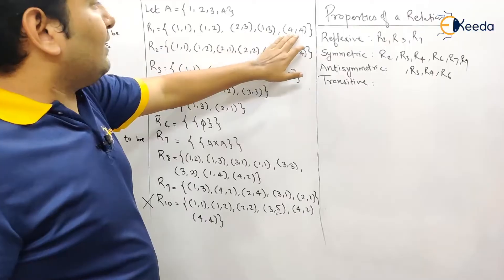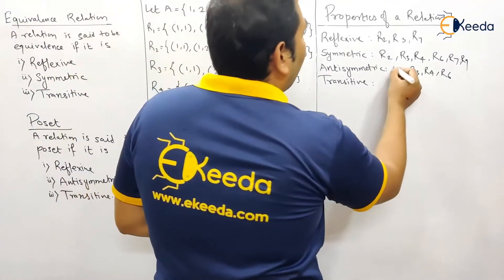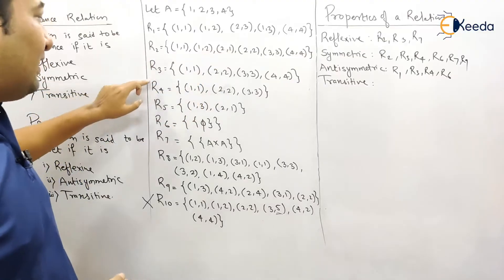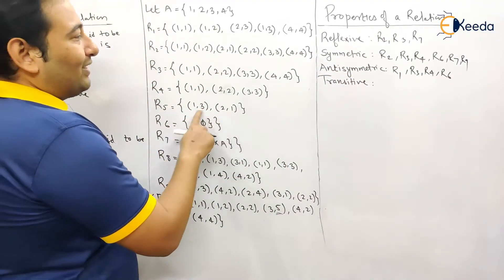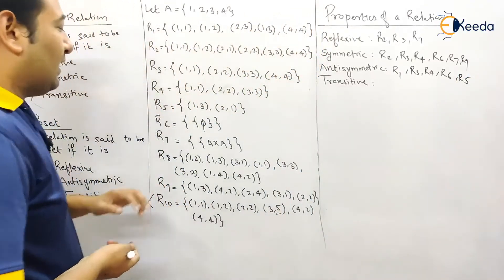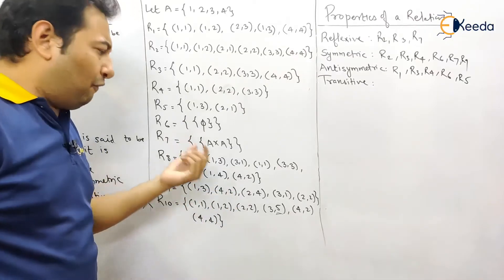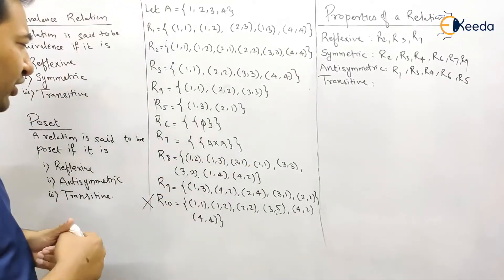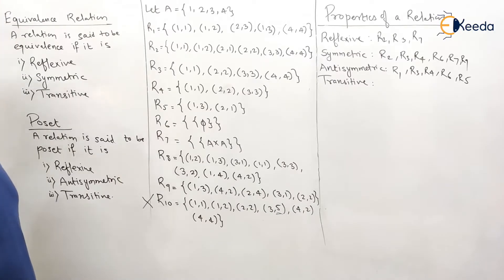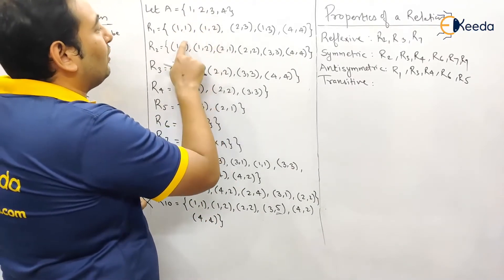Now anti-symmetric. For R1: self-elements don't matter. (1,2) is present and (2,1) is not — good. (2,3) present and (3,2) not — good. (1,3) present and (3,1) not — R1 is anti-symmetric. R2 is not anti-symmetric because both (a,b) and (b,a) are present. R3 and R4 already noted as anti-symmetric. R5: (1,3) present and (3,1) not; (2,1) present and (1,2) not — R5 is anti-symmetric. R6 and R7 already handled. R8: has a pair where both (a,b) and (b,a) are present — not anti-symmetric. R9: also not anti-symmetric.